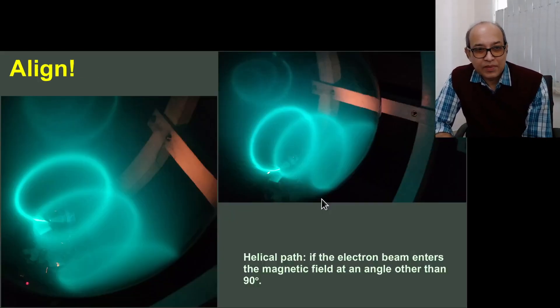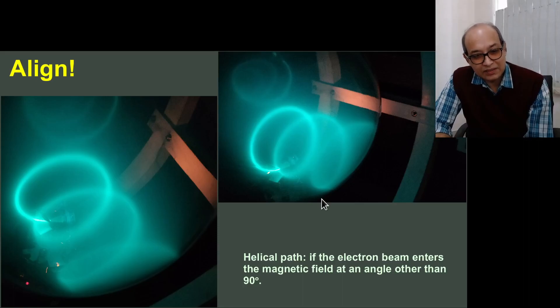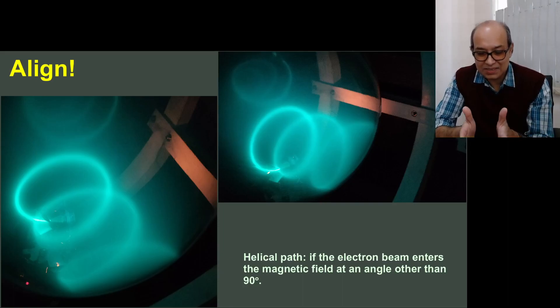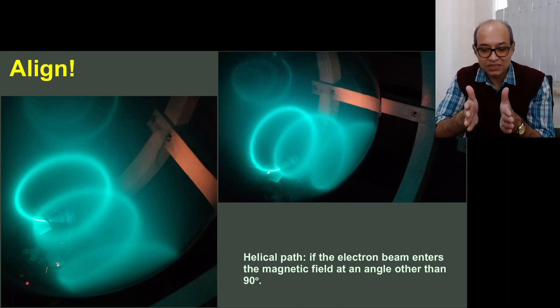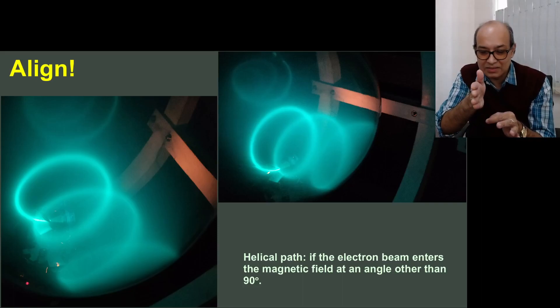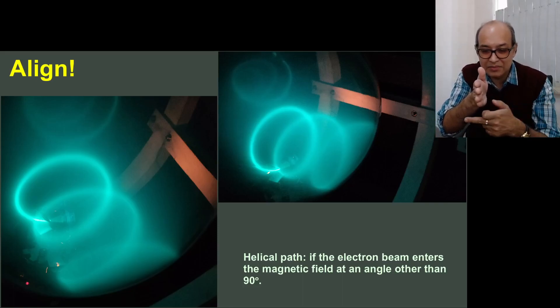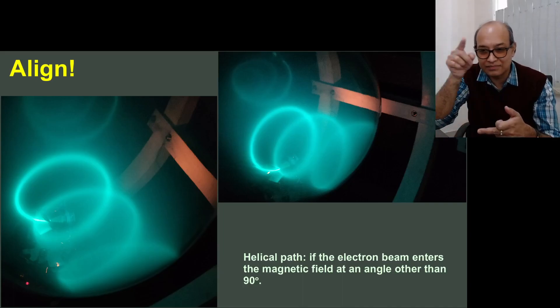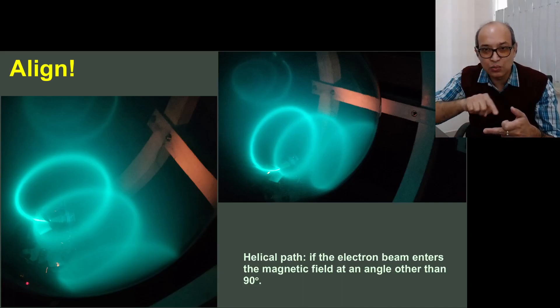Now the first part of the experiment is to align the electron beam. What we mean is the electron beam as it comes out from the anode must be perpendicular to the magnetic field. Let us say magnetic field is in this direction and the electron beam is in the perpendicular direction. Then we know that due to Lorentz force it will have a circular trajectory.